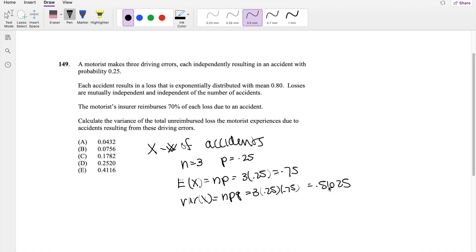Alright, and now let's let L be the loss of each accident, right? Then we know L, the loss, is exponentially distributed with a mean of 0.8.